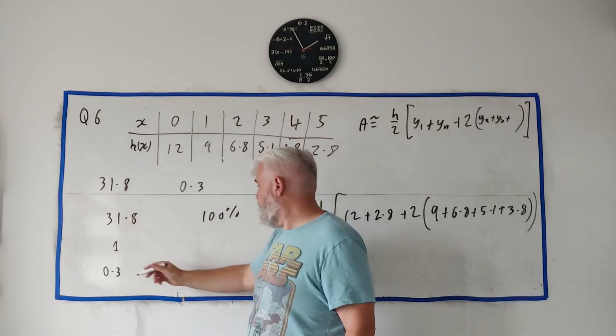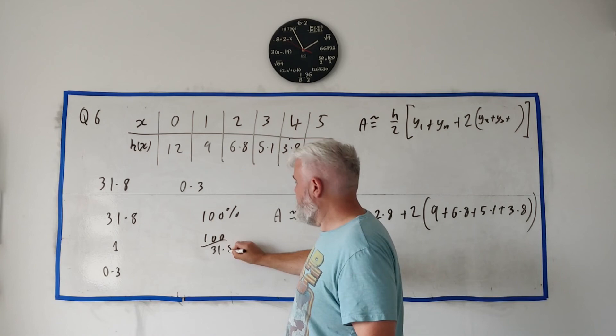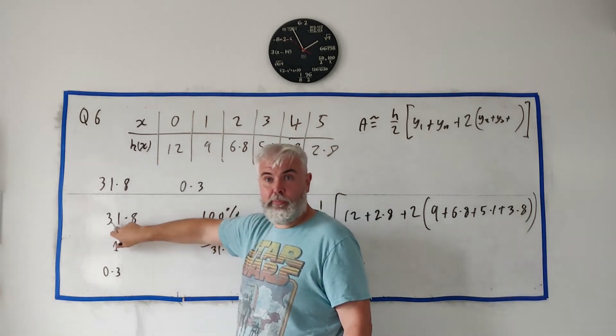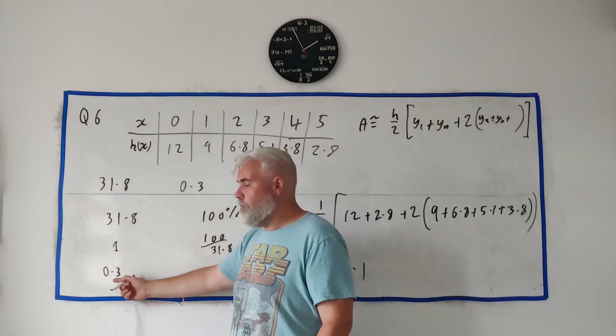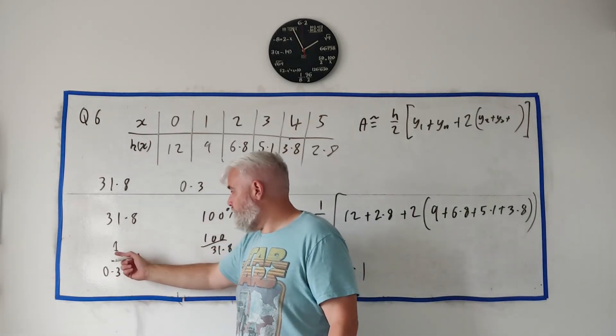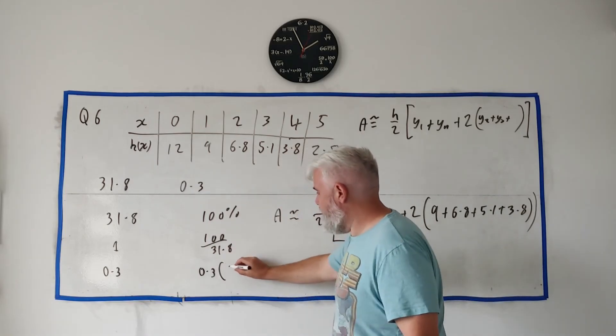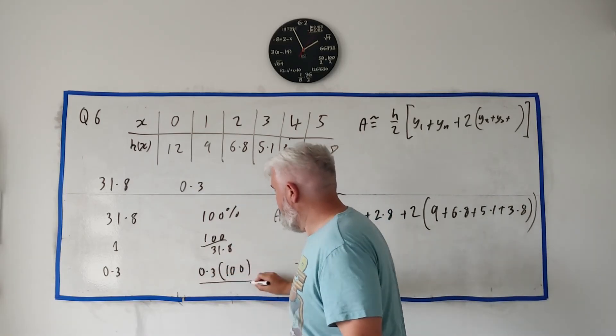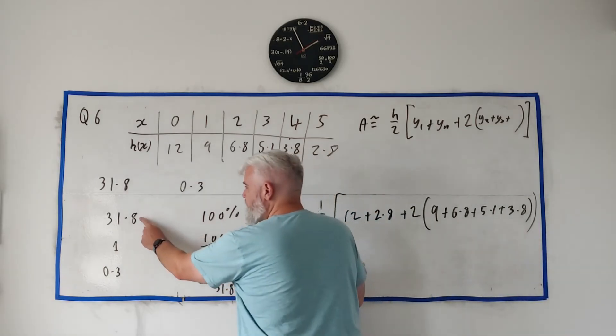How do we get from 31.8 to 1? We divide it by 31.8. If you divide this by 31.8, you better be fair to do this side. How do we get from 1 to 0.3? Multiply it by 0.3. So 0.3 multiplied by this guy, 100 divided by 31.8.